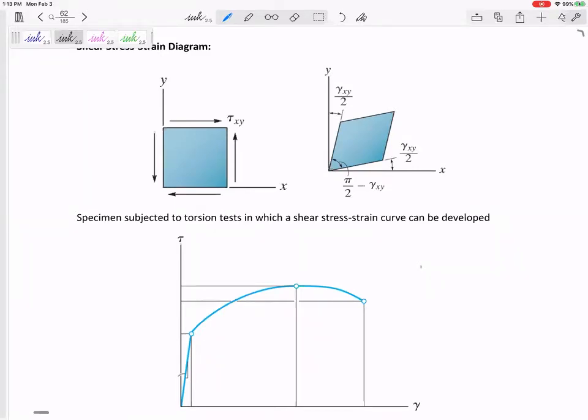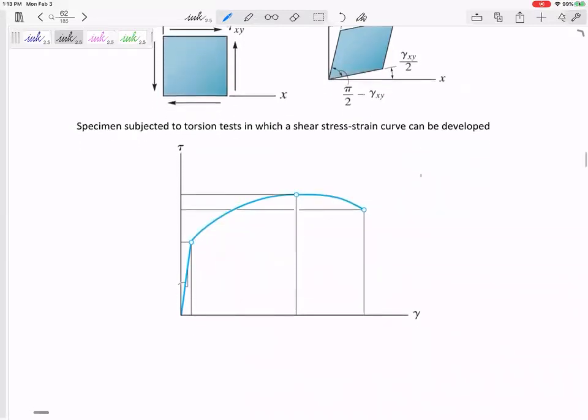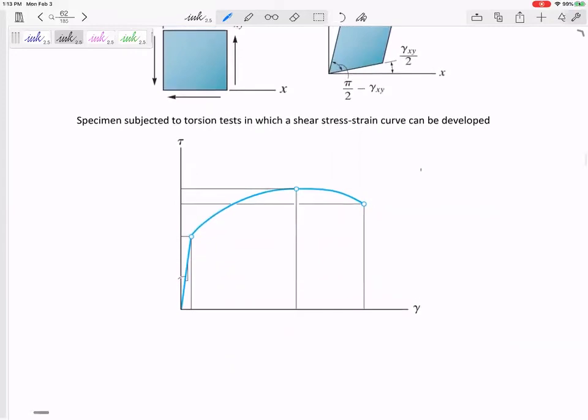So this one kind of goes straight from our elastic region to the strain hardening region and then to the necking region. Some regions are wider than others, but they behave similarly, especially with the loading and unloading.